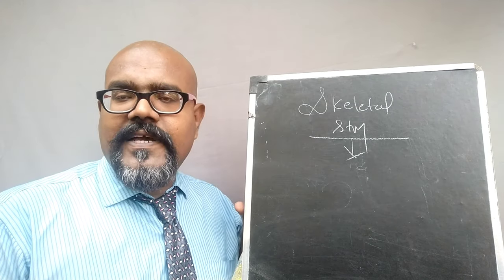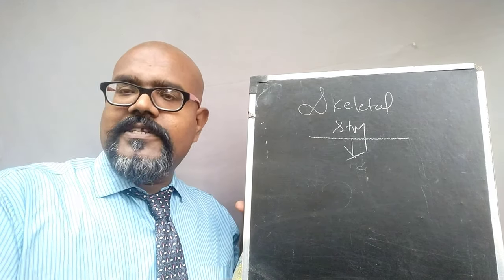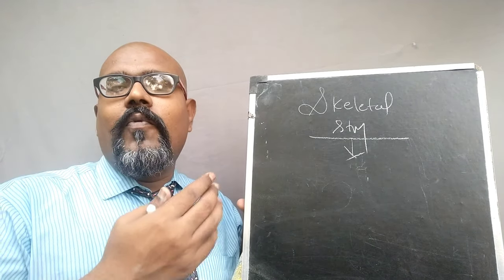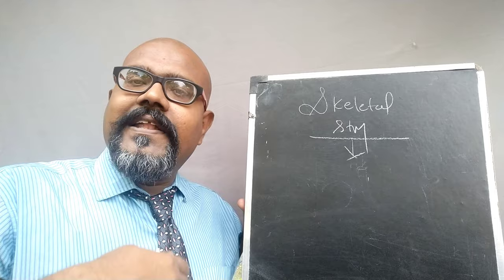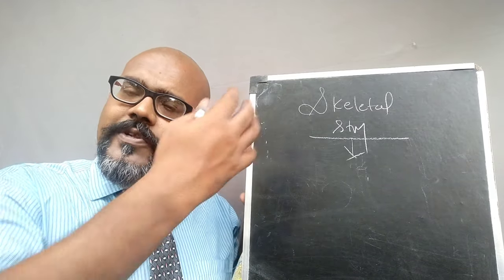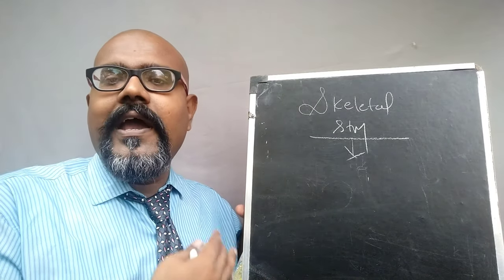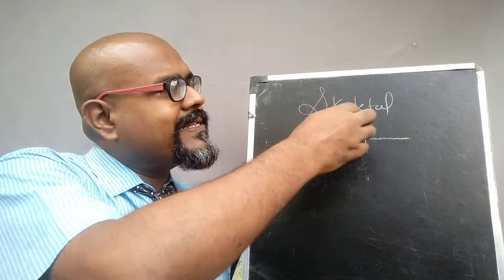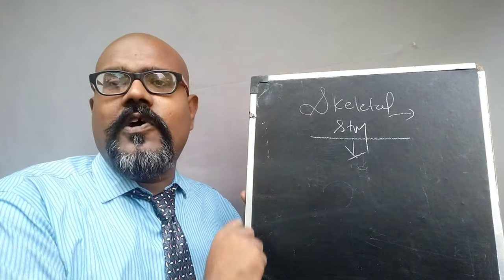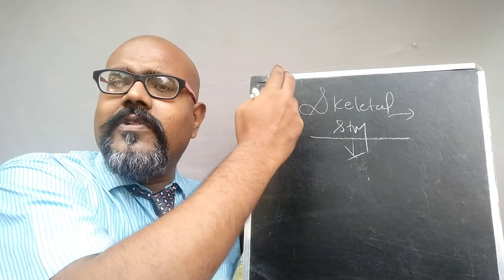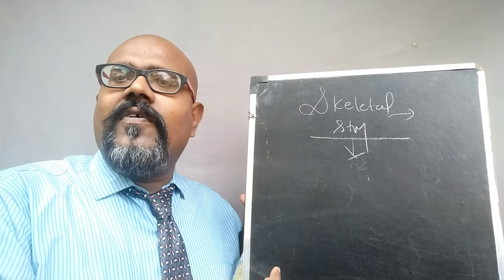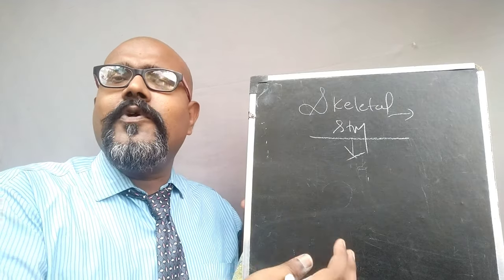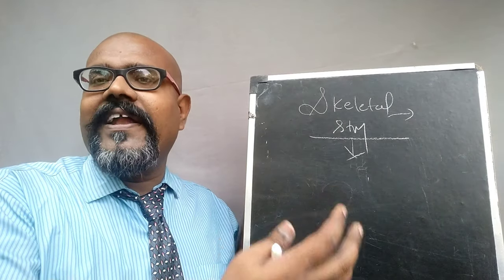In the previous class we discussed the introduction of the skeletal system, including how we can classify the whole skeletal system. The whole skeletal system can be divided into the axial and the appendicular. Apart from this, according to the size of the bones, we can classify bones into five different types.